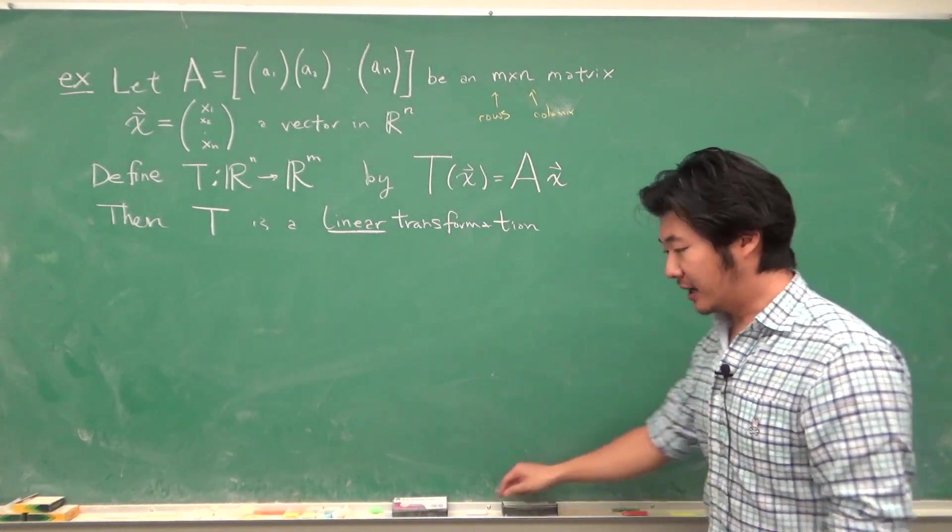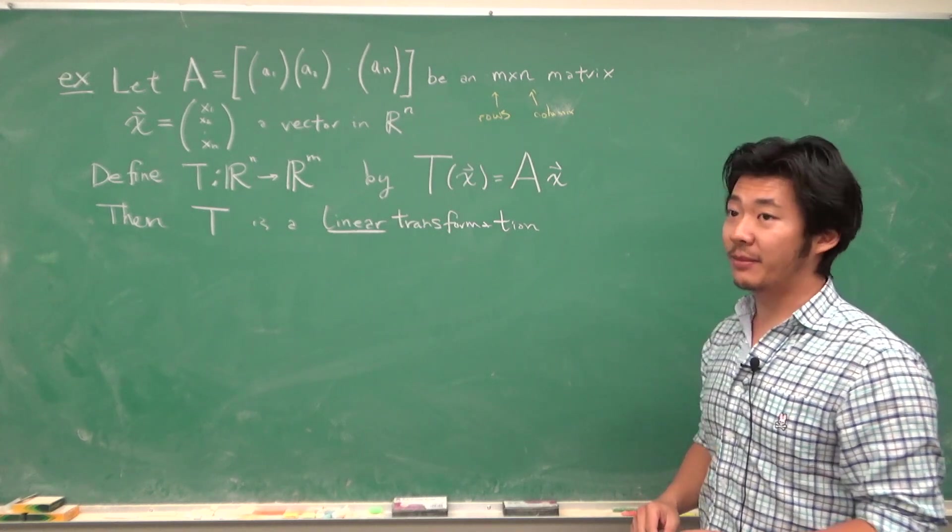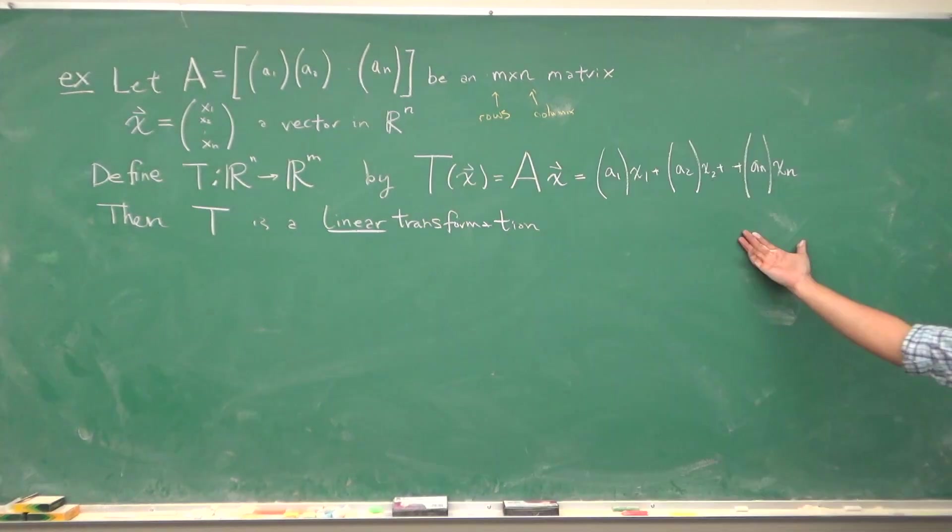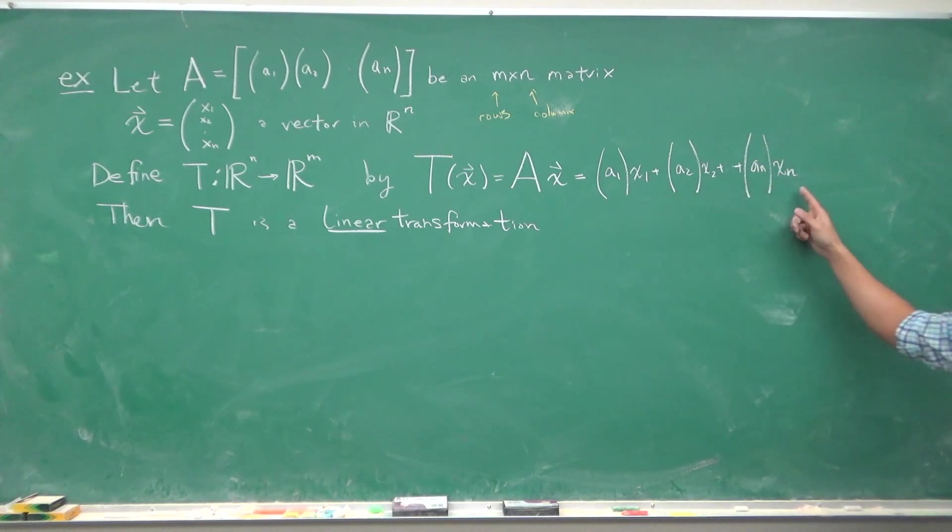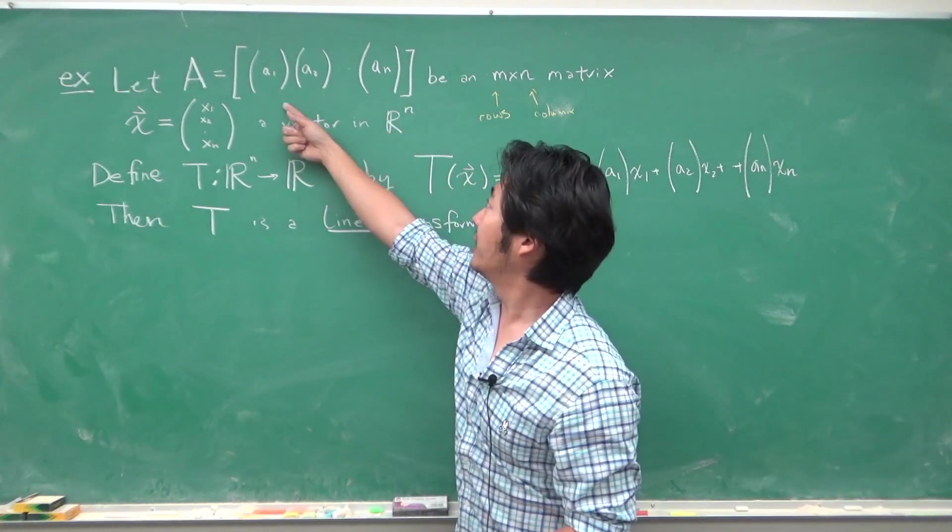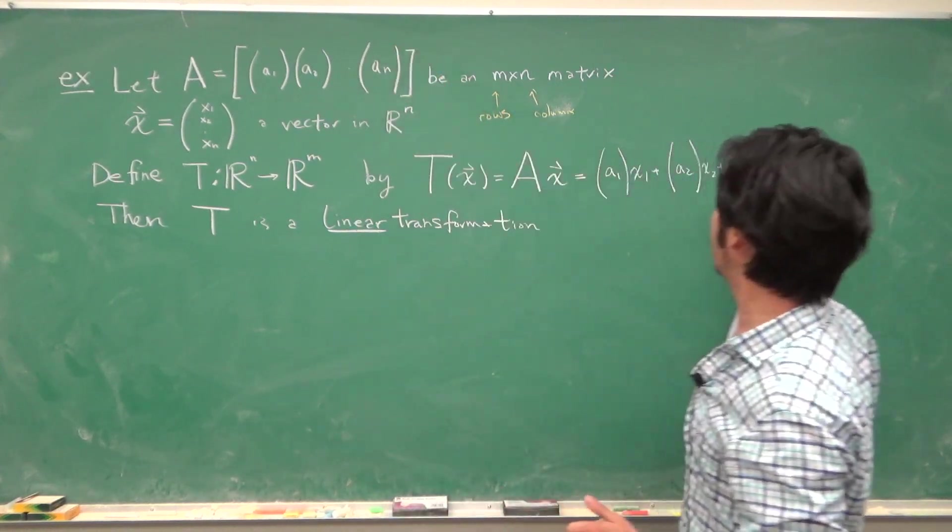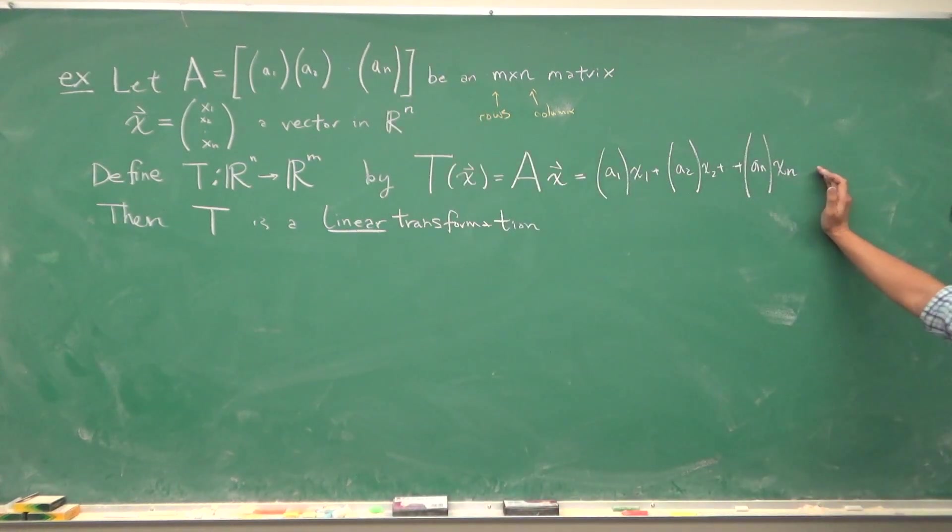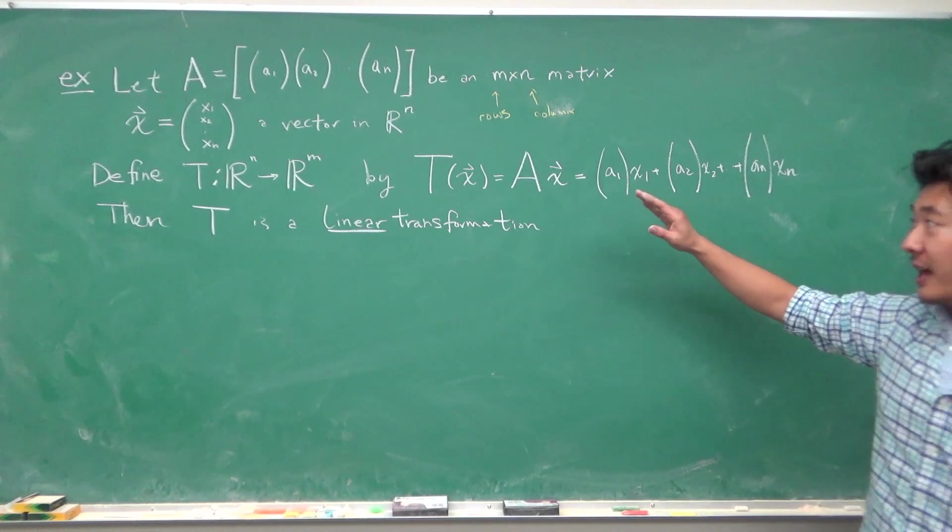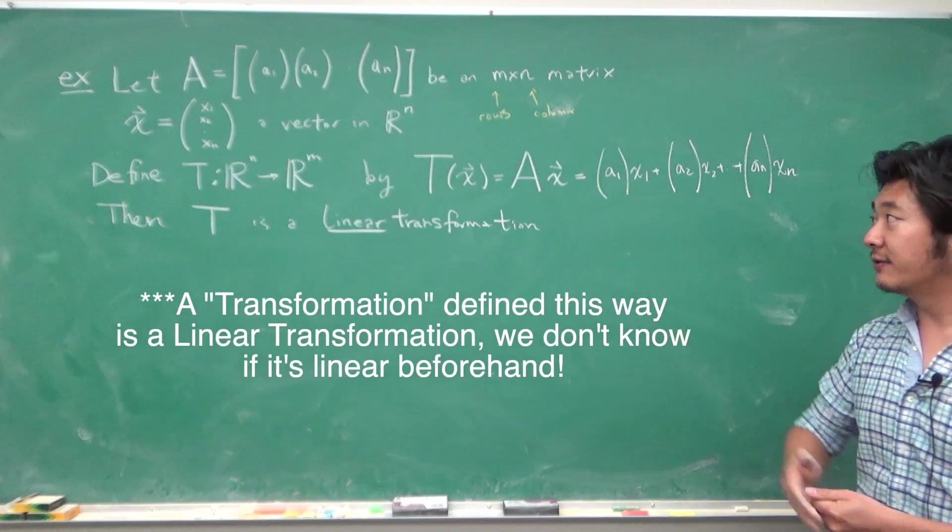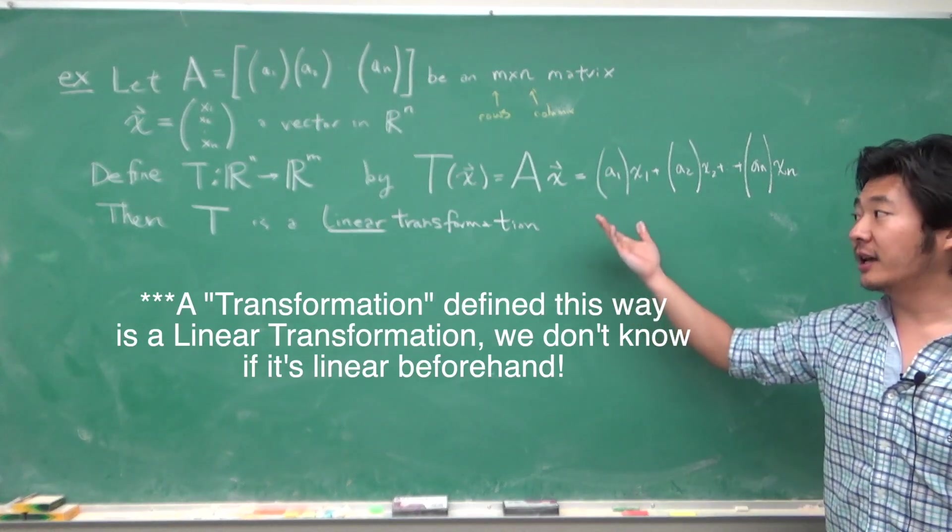Now remember that multiplying a vector by a matrix is defined to be writing out the linear combination of the columns of the matrix A with the weights as the entries of your vector. And this is a vector in Rᵐ. Because while there are n many columns, each of these columns will have m rows, and so this will have m entries.